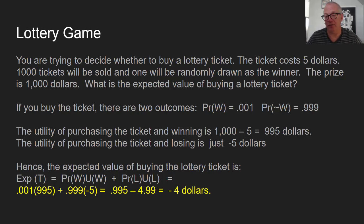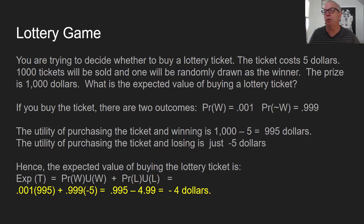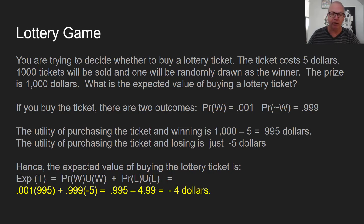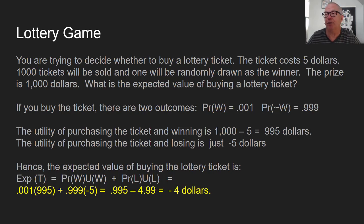There could be other utilities someone might derive from playing the lottery — maybe it's a church lottery to build homes for the homeless, so you're doing some good in the world, or you feel some self-satisfaction at donating to a good charity. Those are all utilities that, in a more elaborate account, we'd build in as advantages. But in this simple case where we're only looking at money in and money out, this is a minus $4 proposition.